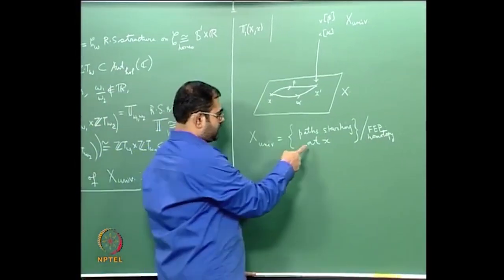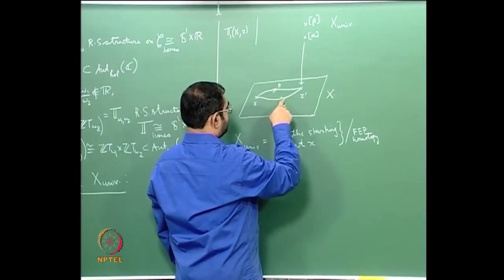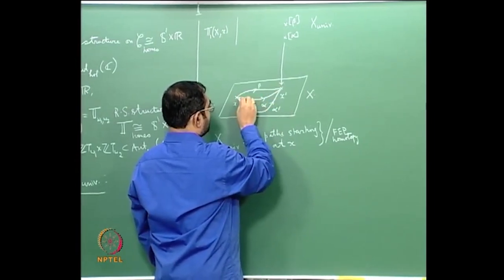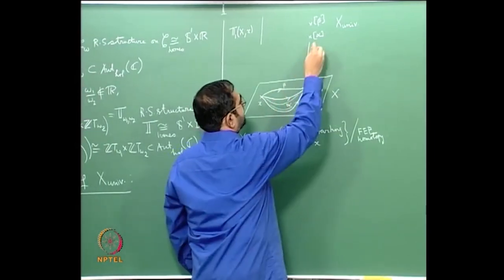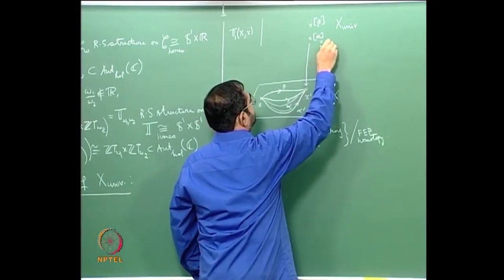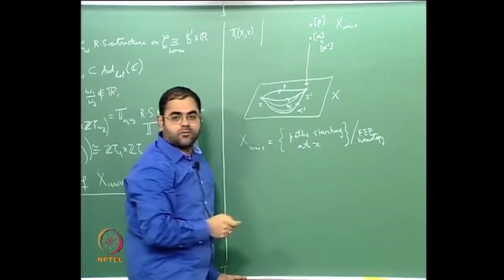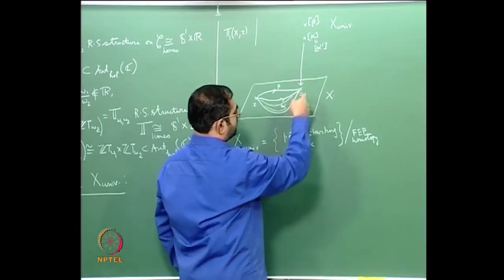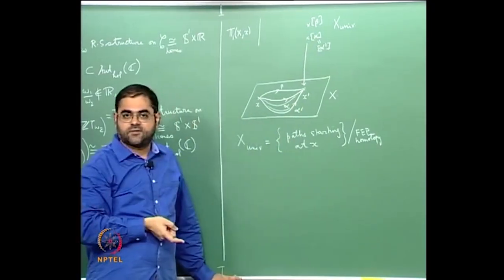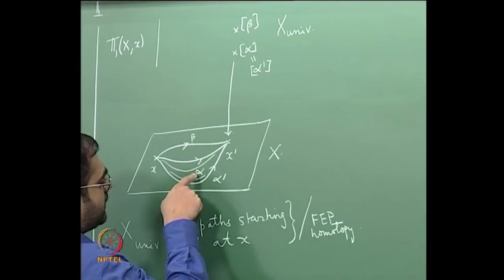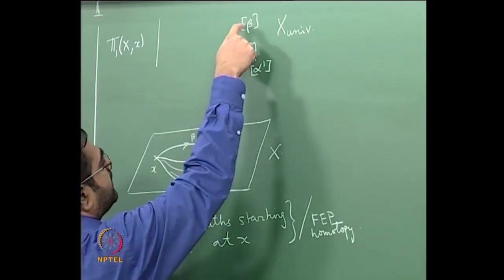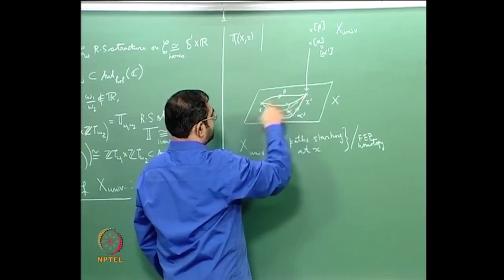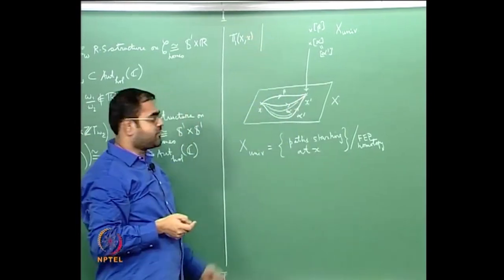If α and α′ are two paths such that α can be continuously deformed to α′ keeping endpoints fixed, they give rise to the same point above in the fiber over x′. And x′ is just α(1), the terminal point of α. A β not homotopic to α gives a different point. When x′ = x, we simply get the fundamental group as the fiber above x.